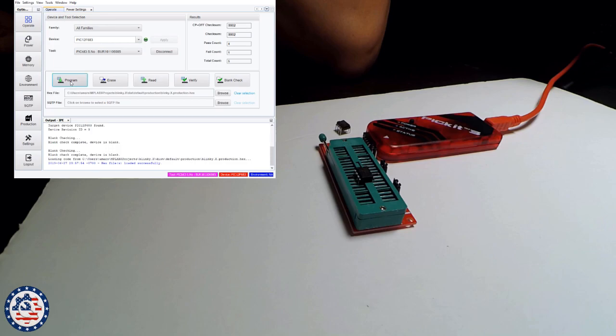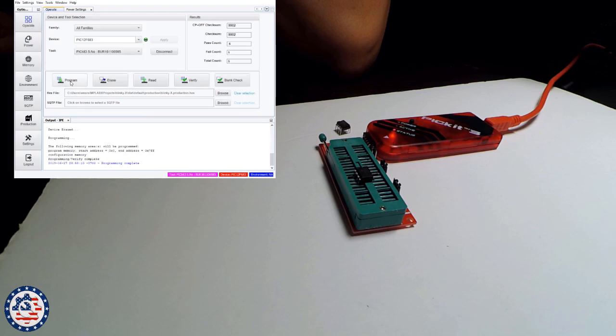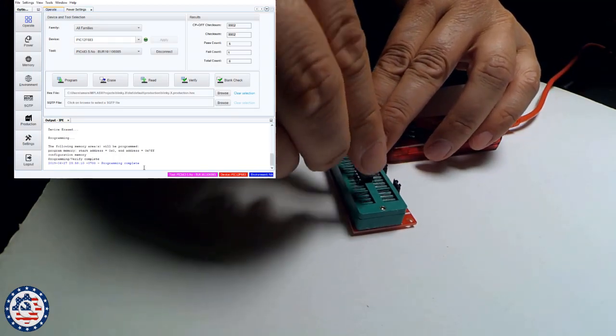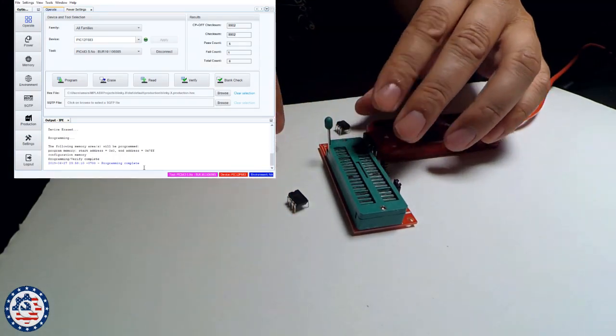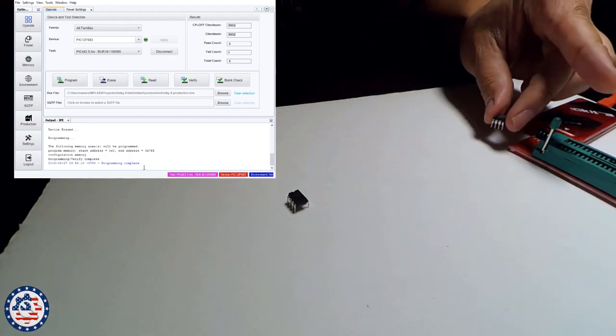And I'm going to go and hit program. And this is going to go and program that chip. There you go. It says program complete. And I can now remove this chip from there and move the programmer aside and this blank chip aside.